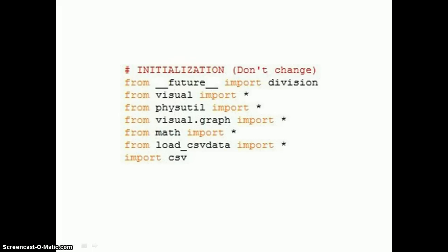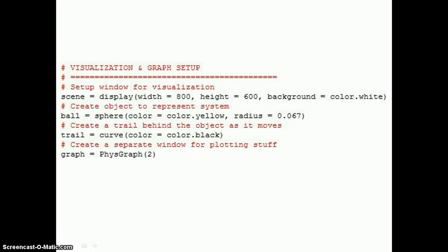Here are the initialized conditions calling various programs. Here is the setup for the visual model in Python. The screen is set to a specific size and the tennis ball is set as a colored sphere. There is an established trail to mark the path of the ball and an initialization for the graph.